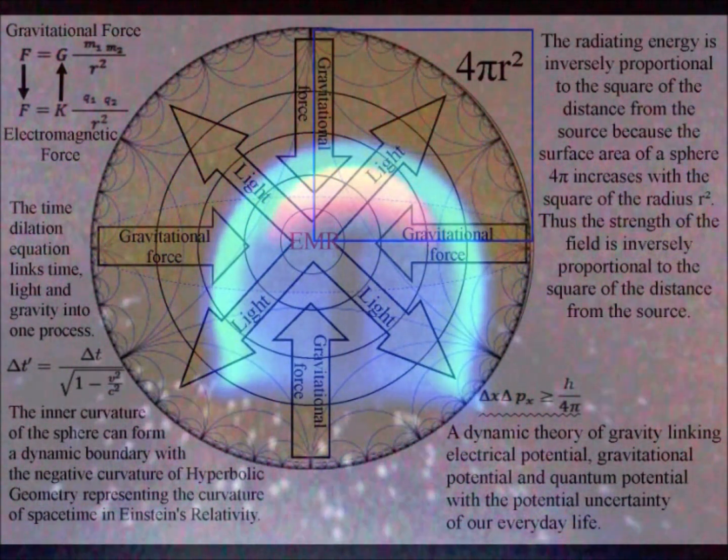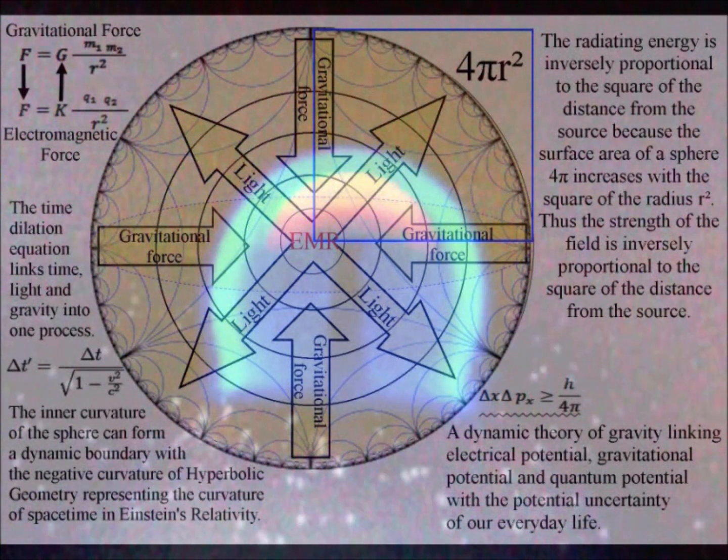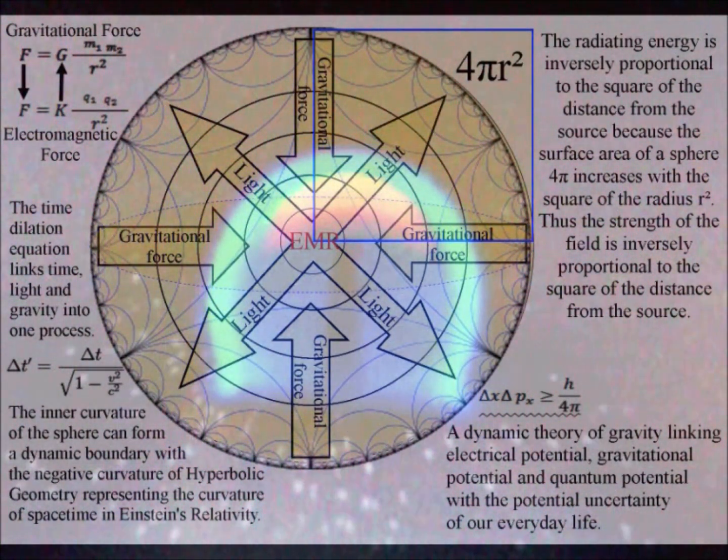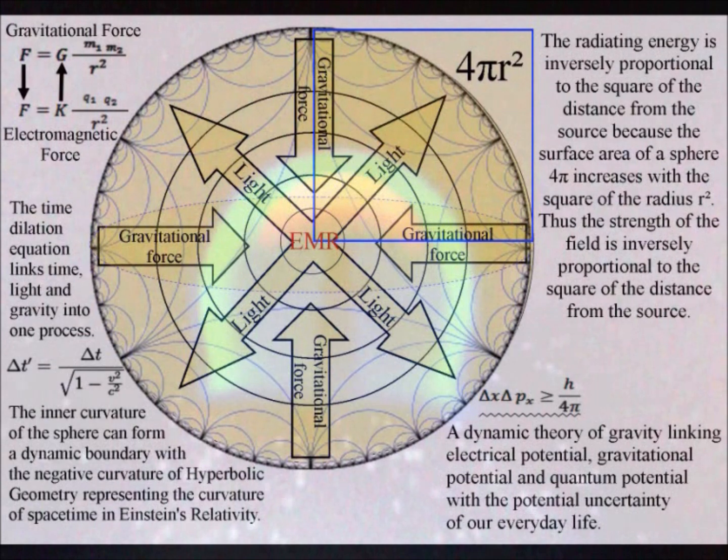The strength of radiating energy is inversely proportional to the square of the distance from the source because the surface area of a sphere increases with the square of the radius. Thus the strength of the field is inversely proportional to the square of the distance from the source.